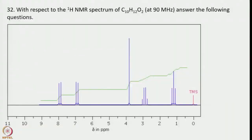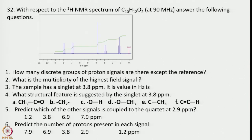Now let us look at another example. With respect to the 1H NMR spectrum of C10H12O2, answer the following questions. There are 5 signals apart from TMS, which is the reference at 0 ppm. So the number of discrete groups of proton signals is 5. The highest field signal, the most shielded one closest to TMS, is a triplet.